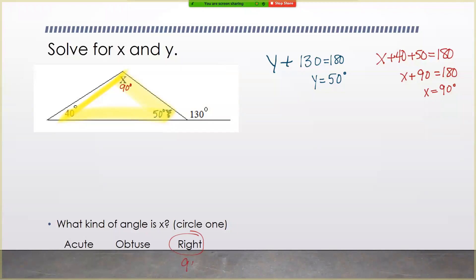Right angles are 90 degrees. Obtuse angles are greater than 90 degrees. And acute angles are less than 90 degrees.